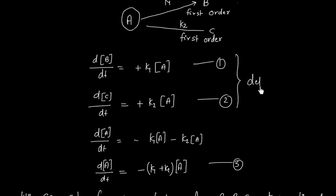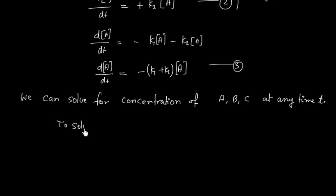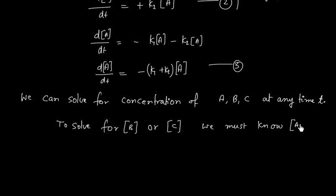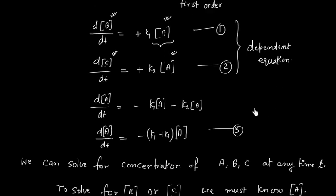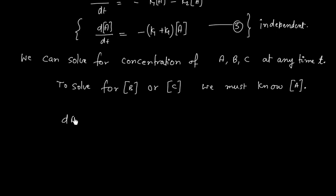Equations 1 and 2 are dependent equations. On one side we have B, and on the other side we have A. Similarly, for equation 2, one side has C and the other has A. So we cannot solve for B or C without knowing the concentration of A. Equation 3 is an independent equation, so it can be solved independently.